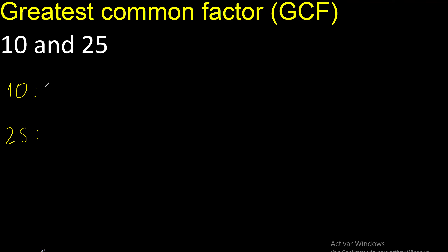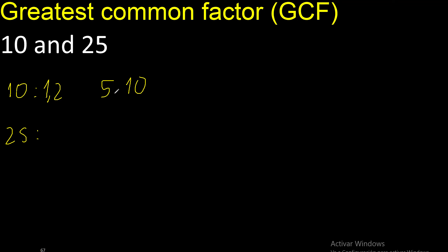Always start with 1. Factors: 10 divided by 1 is 10. Next 2: 10 divided by 2 is 5. Next 3: cannot be divided by 3. Cannot be divided by 4. Next 5: 5 is here. Factors.